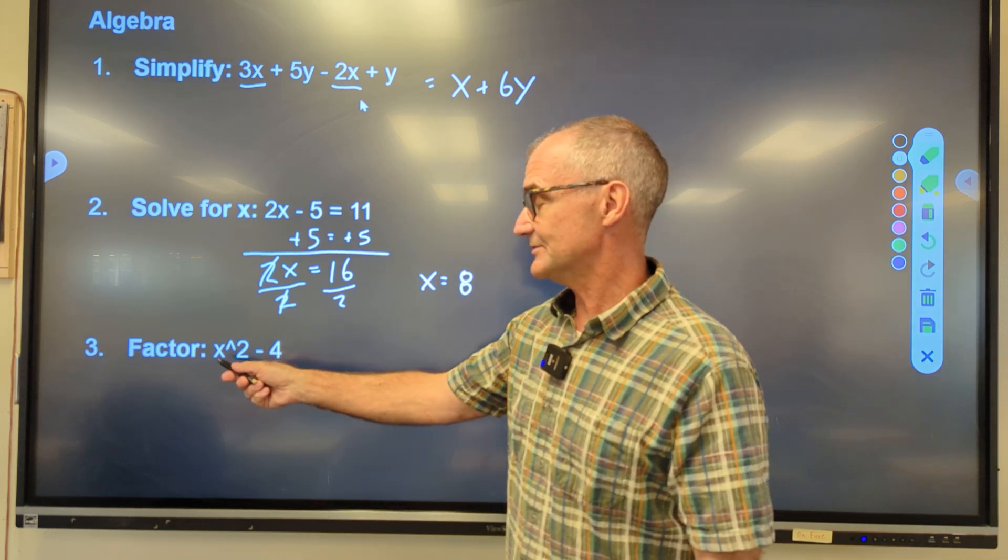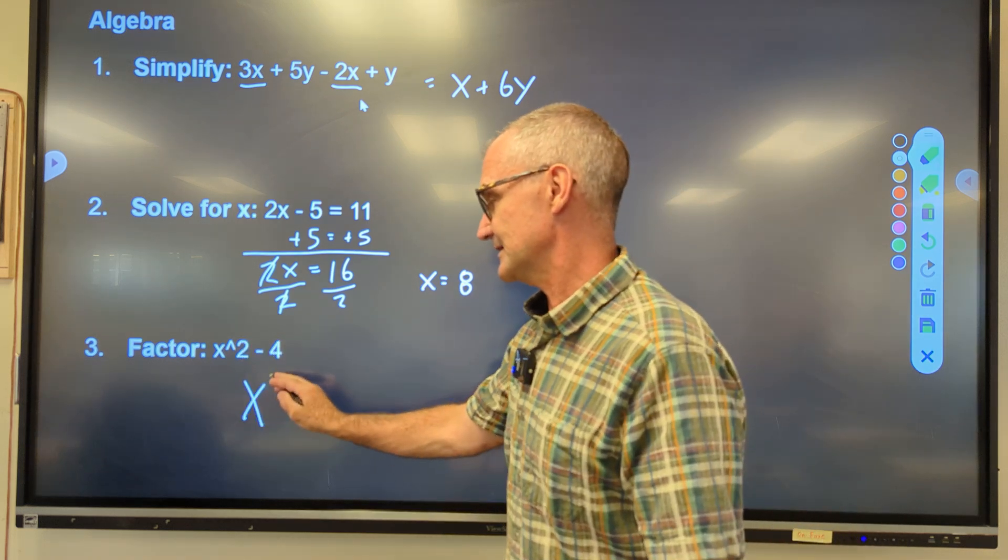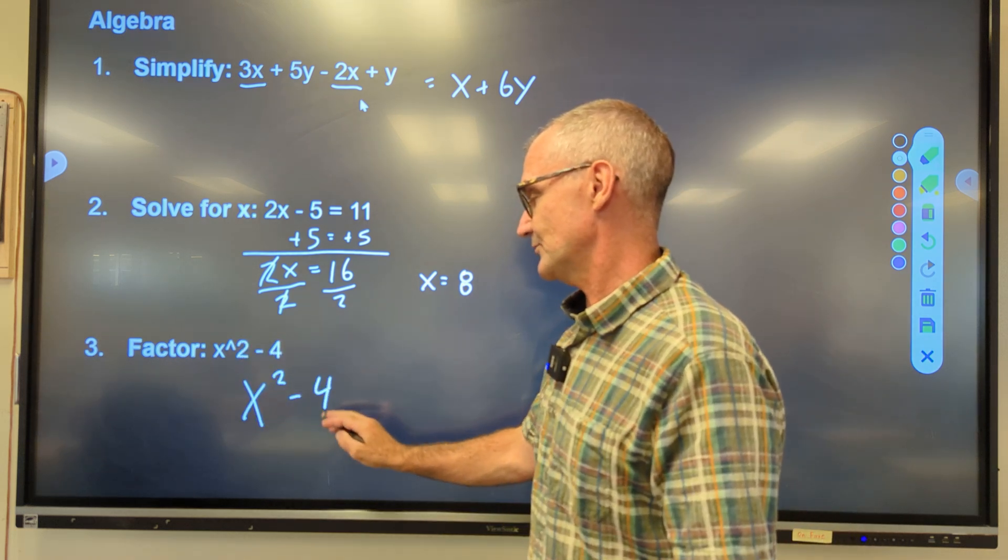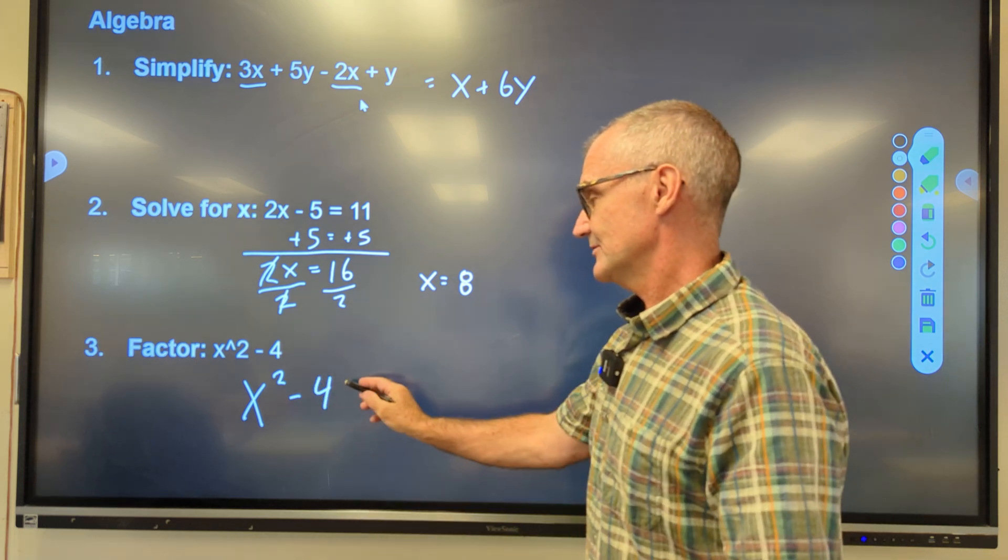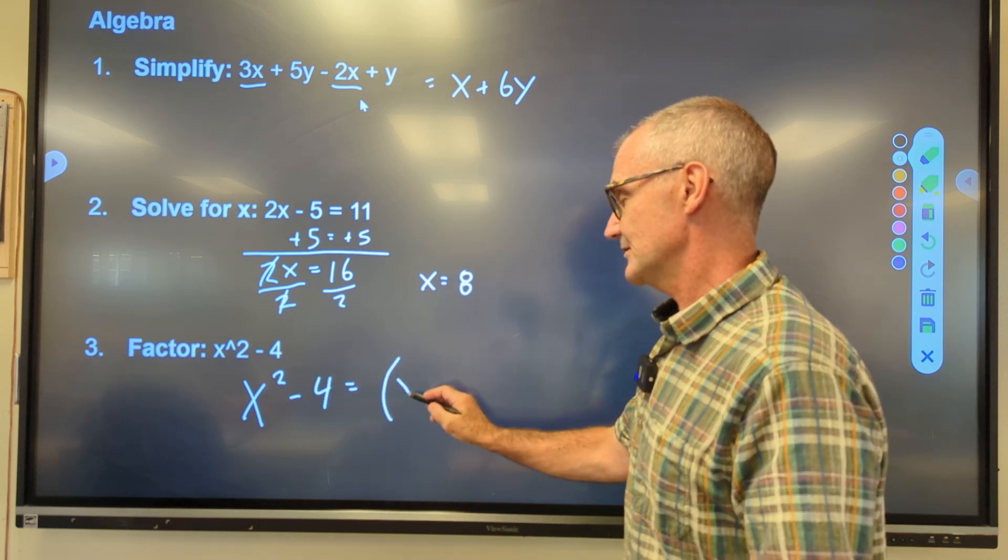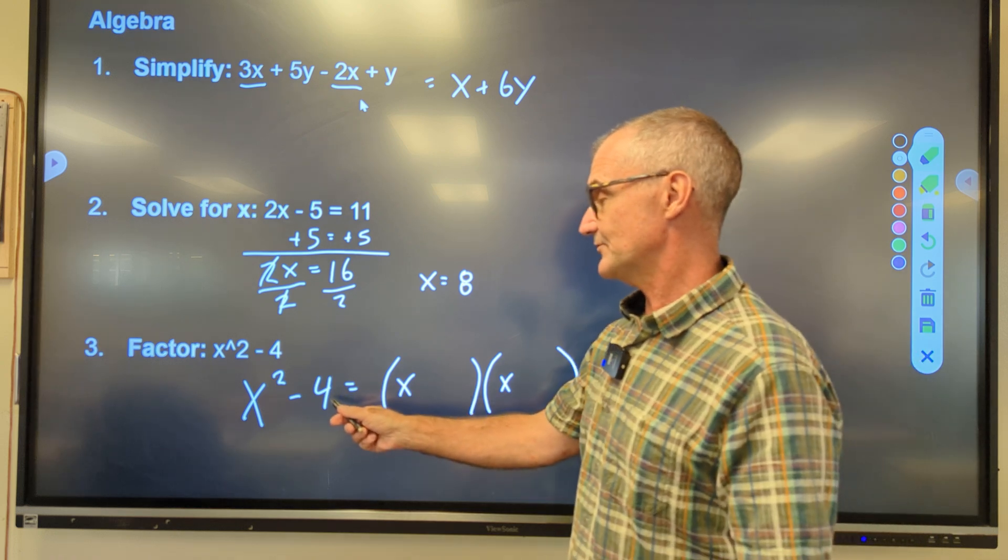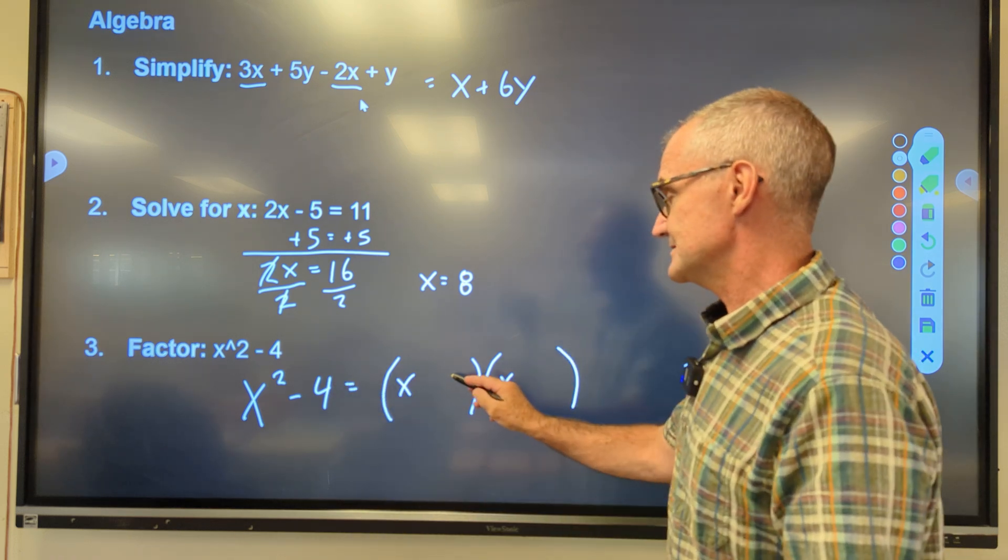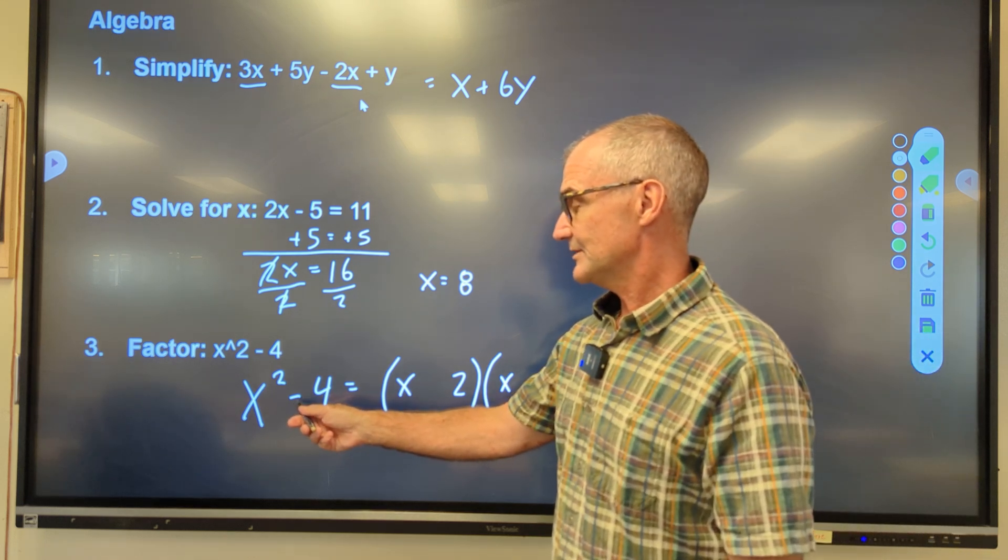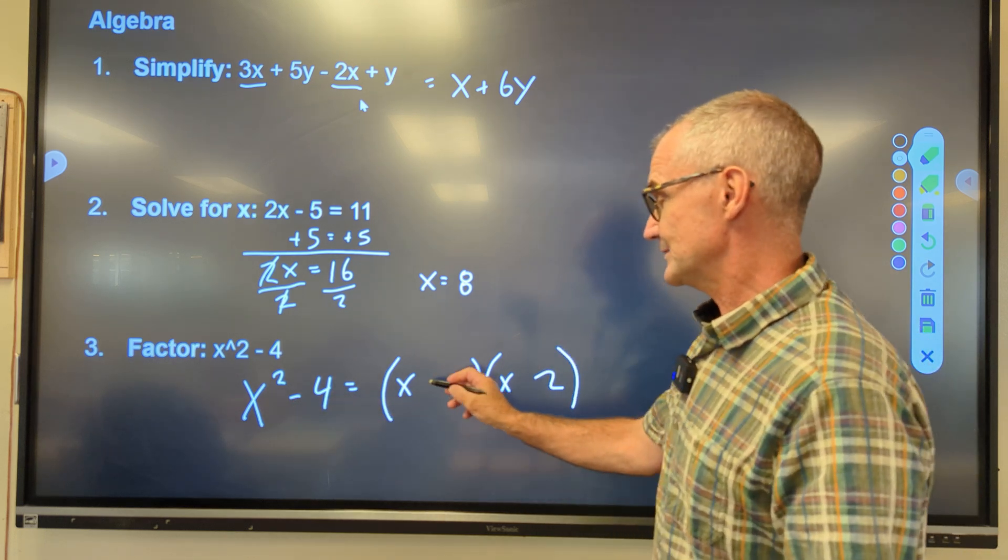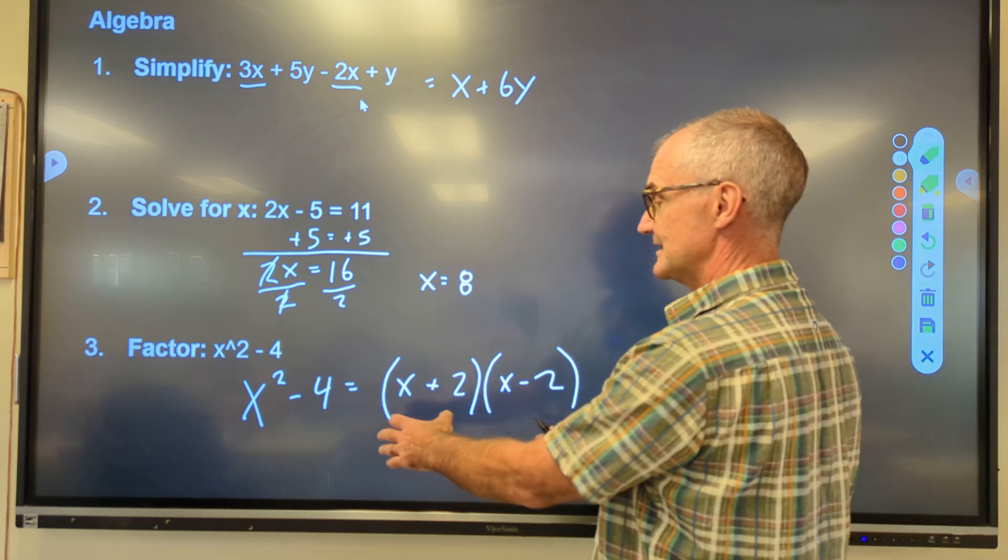Again, not hard. Just checking if you know the rules of mathematics. Number three, factor x squared minus 4. That little carrot right there is the same thing as writing it this way. So I have x squared minus 4. I'm looking for two things multiplied together to equal that. Well, the only factors of x squared are an x and an x. And the only factors of 4 so that the middle term cancels out is a 2 and a 2. Then for the last terms to multiply together to be a negative, one has to be positive, one negative.